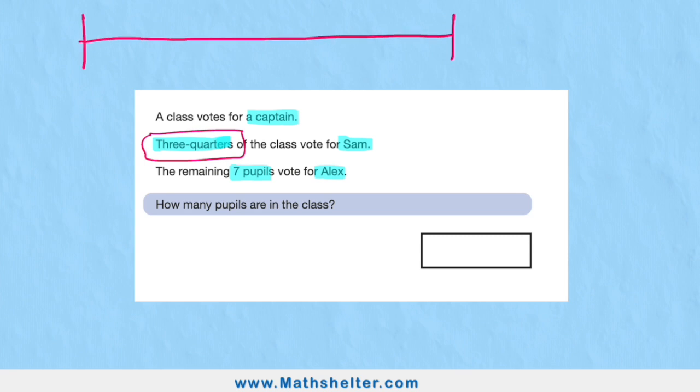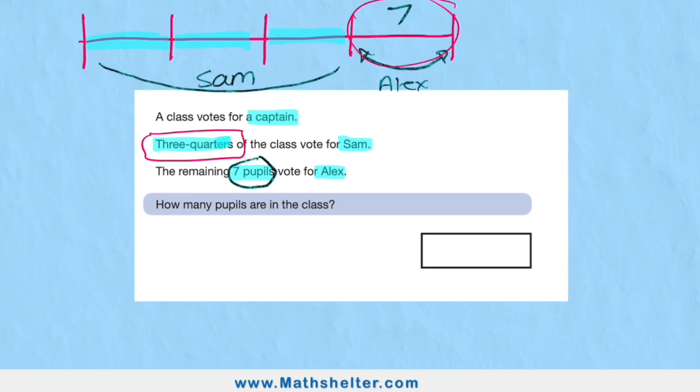Three-quarters vote for Sam, so let's get a bar and break it into quarters. There we go, I've got four even quarters. Three-quarters of them—one, two, three—all vote for Sam. Then the remaining seven vote for Alex, so we know this section here must equal seven and they voted for Alex.